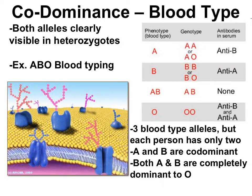Another example of co-dominance is the ABO blood typing system. ABO blood typing violates Mendelian genetics for two reasons: first, there's not a dominant and recessive allele, and second, there are more than two alleles. The ABO blood type keeps track of cell surface markers on red blood cells — an A marker and a B marker. O gives neither marker. This creates a situation where type A and B are co-dominant, but both A and B show complete dominance to type O. A person with AB blood type will have both the A phenotype and the B phenotype at the same time.